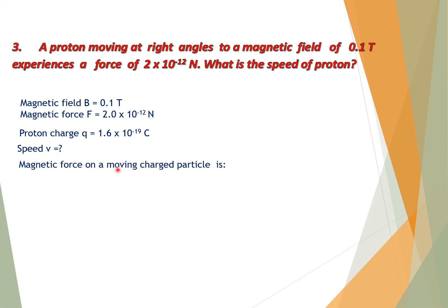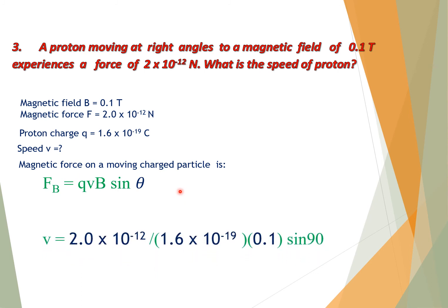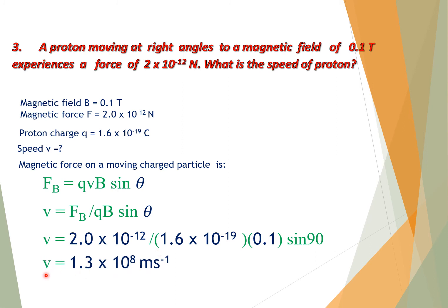The magnetic force on a moving charged particle is F_B = QVB sinθ. Solving for V: V = F_B / (QB sinθ). Putting in all the values and solving, we get the speed of the moving proton V = 1.3×10⁸ m/s.